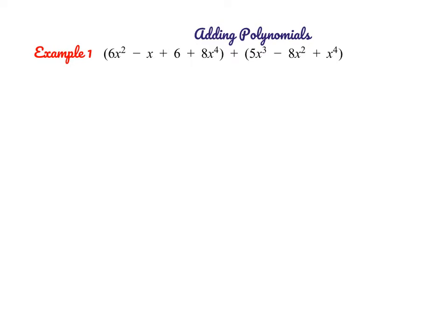Let's start by adding polynomials. When we're adding polynomials, as in example 1, we're essentially just going to be combining like terms. With addition, those parentheses don't really affect how we do this problem. We're looking for terms that are the same. Some people like to line them up underneath the like terms. So we've lined that one up underneath, and then I see an x squared term, so I'm going to put negative 8x squared underneath my other x squared term. And then I see an x cubed term — I don't see an x cubed term in the first polynomial, so it's just going to stay the same.